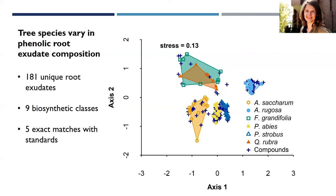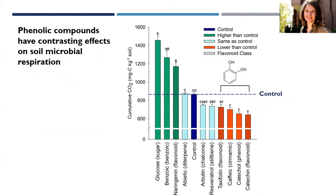From the identified compounds, I tested a subset of phenolic compounds and measured their effect on soil microbial respiration. I chose compounds belonging to the different chemical classes I had identified. On the graph, you can see those chemicals on the axis and the amount of CO2 respired over a five-day period, with glucose as a positive control and an unamended control in dark blue. The key takeaway is that phenolic compounds can both increase, decrease, or have no effect on soil microbial respiration — already going against the most common hypothesis proposed to explain root priming.